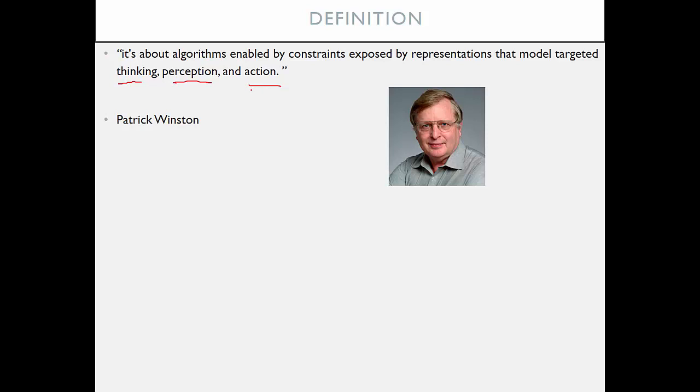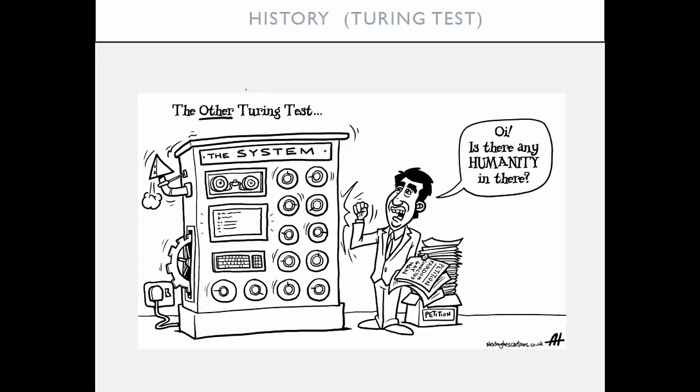In short, there are models that represent thinking, perception, and action. When we have this representation at hand, it helps us to know about its limitations. And at the end of the day, we have algorithms that contain these models about thinking, perception, and action.